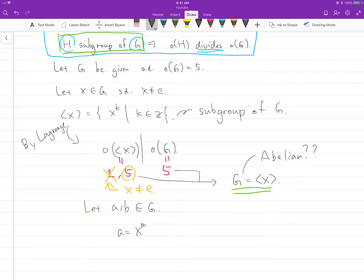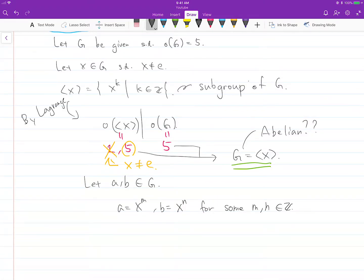Then AB equals X to the M times X to the N, which equals X to the M plus N.